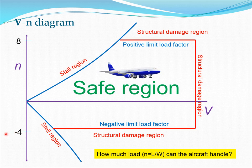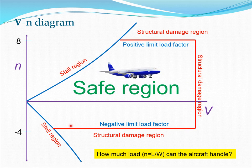N could range from negative 4 to 8 or even more — it could go up to 10, 12 or something like that. We have three straight lines in red which involve the regions for structural damage, and two lines in blue which are the regions corresponding to stall. The airplane can fly within this closed boundary in red and blue, and you can fly safely in this region.